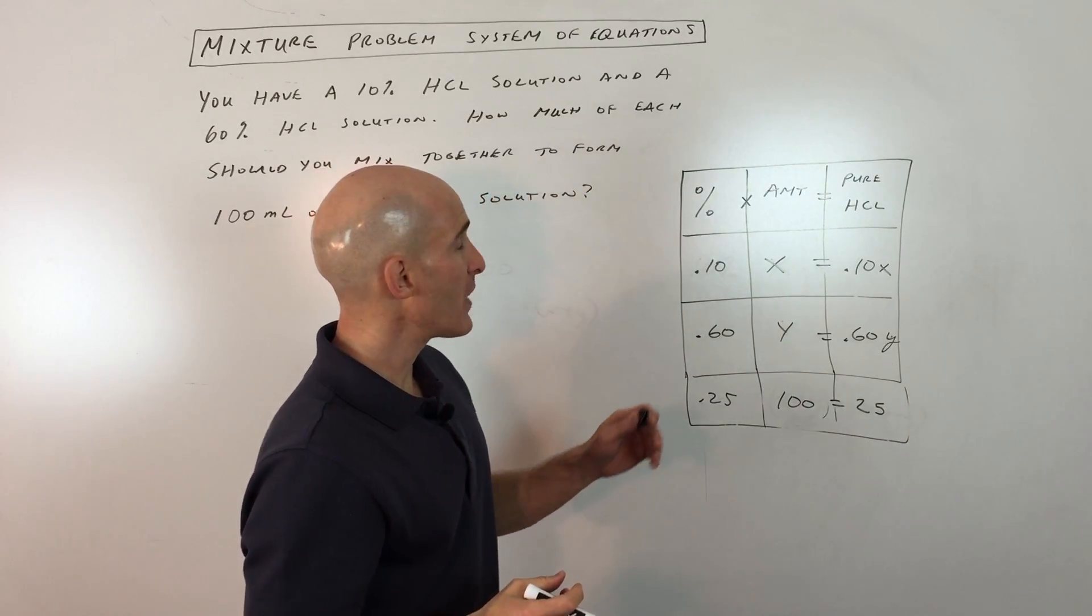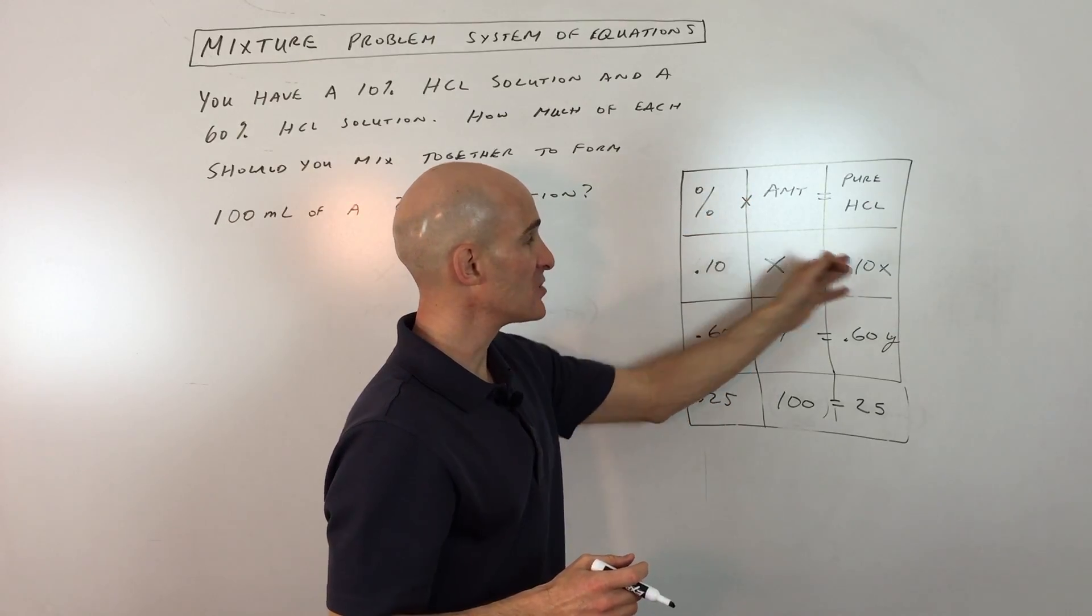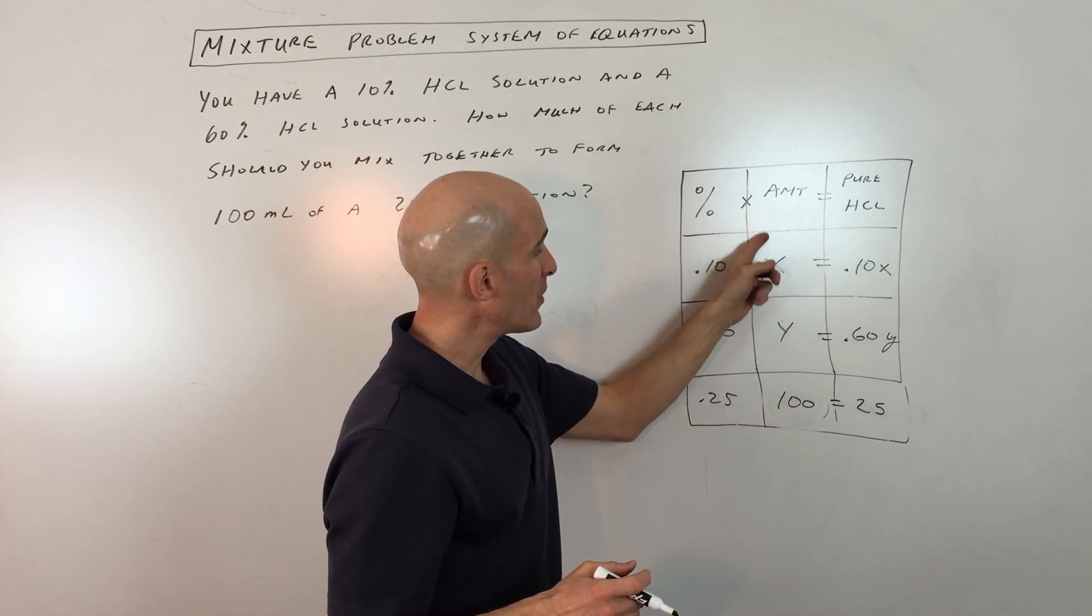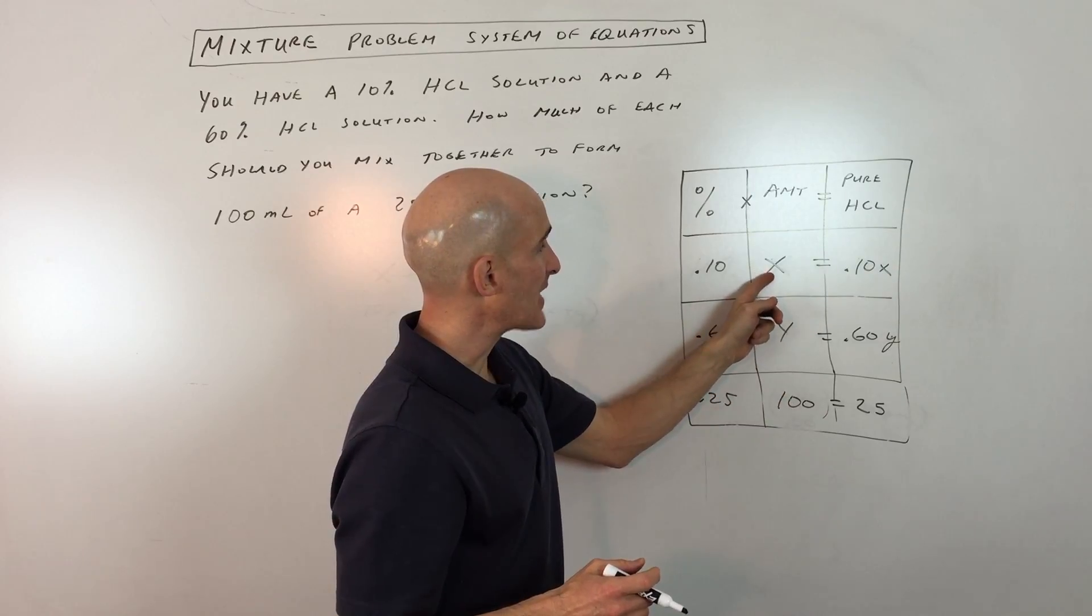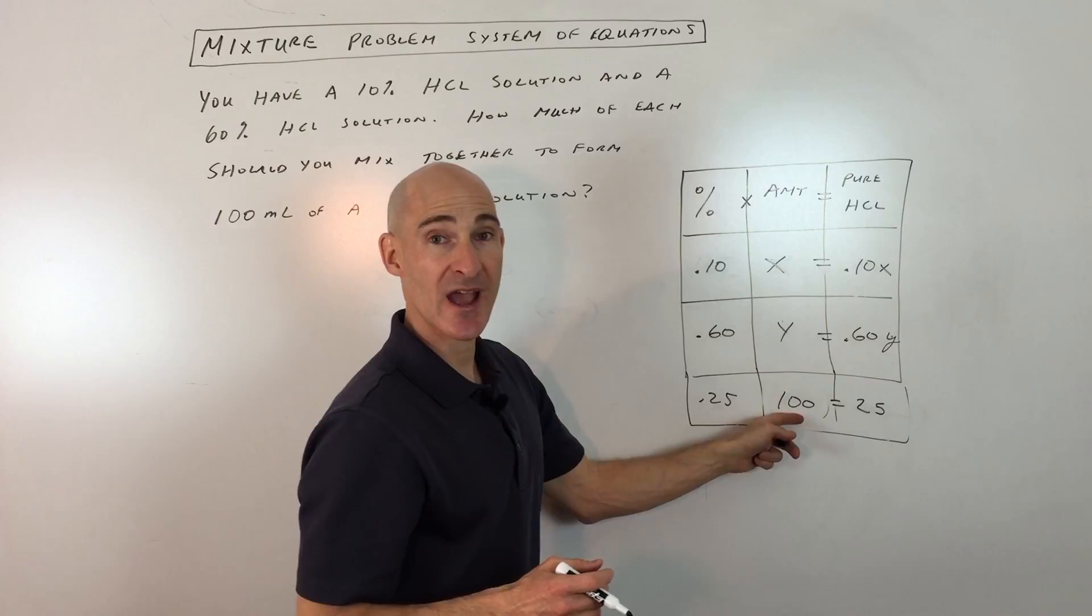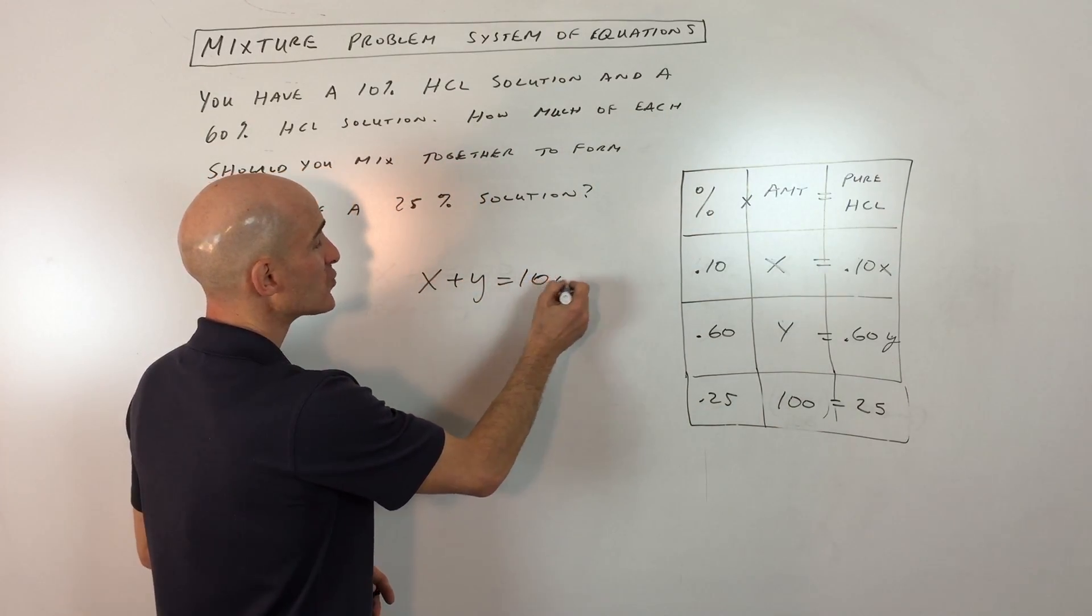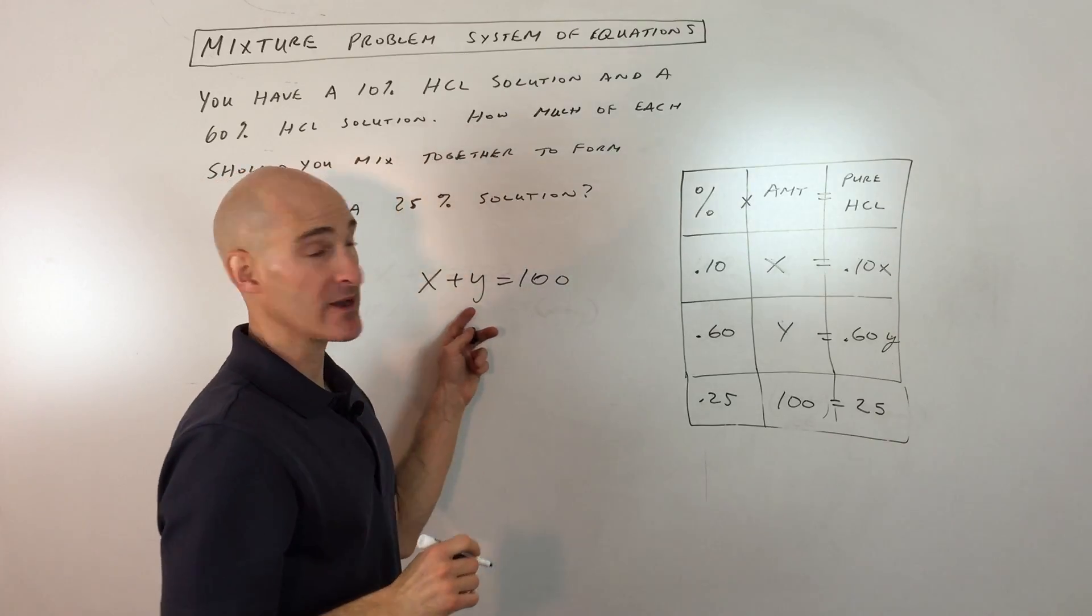So what we have here is we have two equations. When you have two variables, X and Y, you need two equations to solve it. So one equation is the amount. So we have X milliliters of the 10% solution plus Y milliliters of the 60% solution adds up to a total of 100 milliliters. So we have X plus Y equals 100. So that's our quantity.